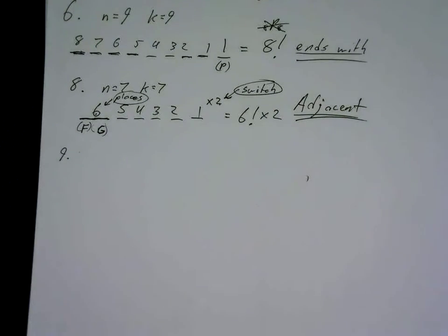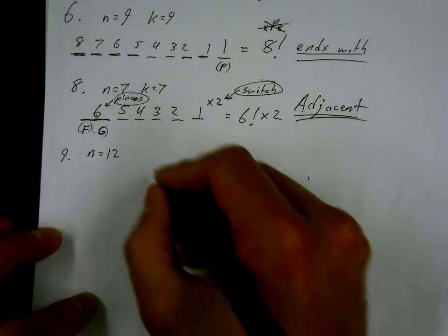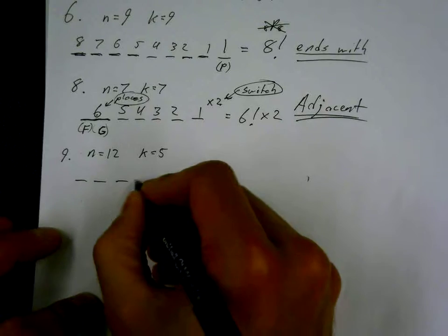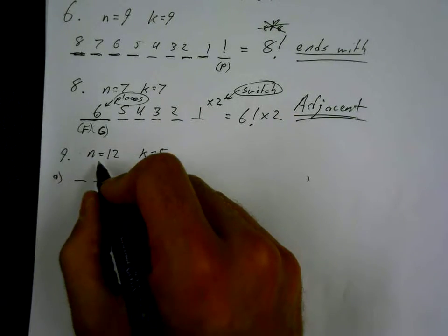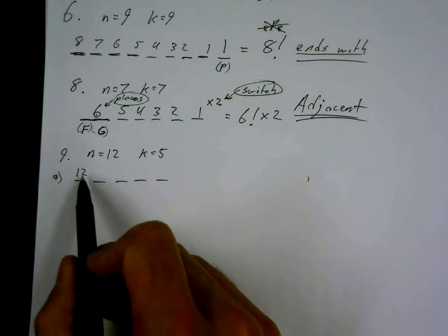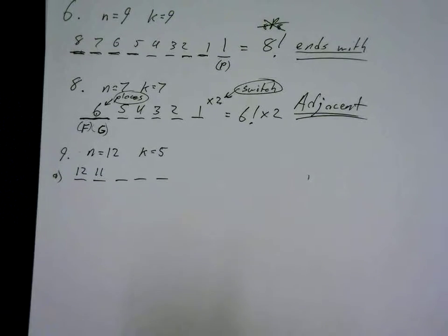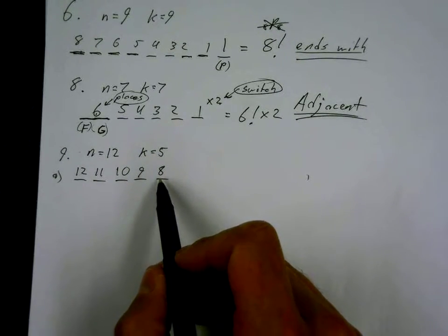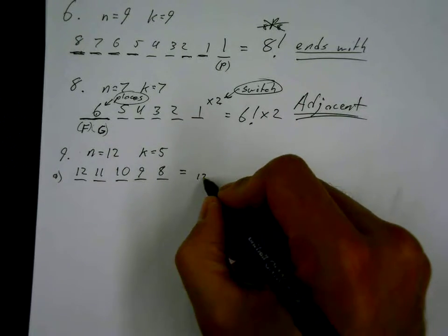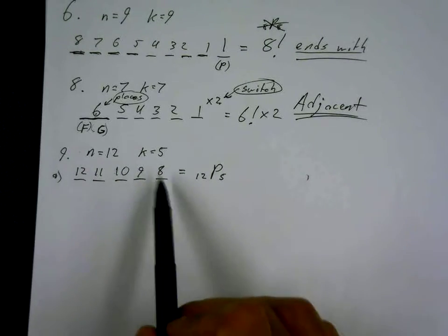Question nine: twelve different portraits are in the Ling family's collection. In how many ways could five of them be hung in a row on the living room wall? This is a partial permutation — n = 12, k = 5. We start with 12 paintings in the bag, pull one out, so there could be 12 possible paintings in the first spot, then 11, 10, 9, 8. This is written as 12P5 — we start counting at 12 and count down five seats.